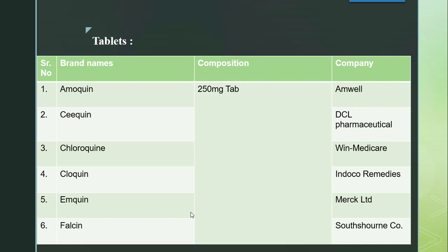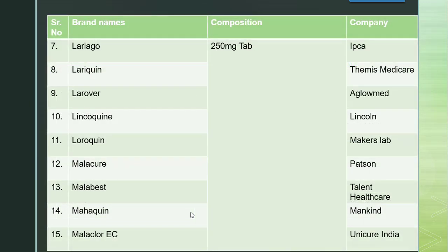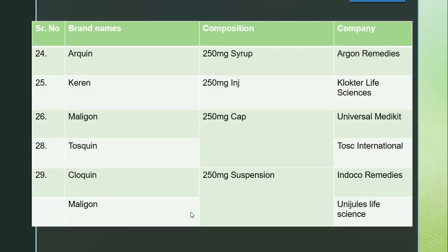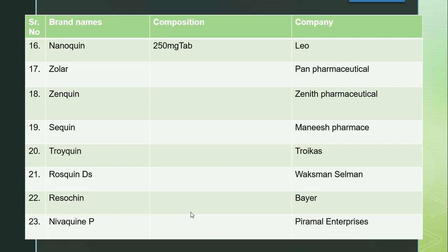Now we will look at chloroquine brand names, but first the dosage forms. All 6 brands in this first slide are tablets of 250 mg strength only. The second and third slides also show tablet dosage form, 250 mg strength. As you can see, 23 different brands are available in the market manufactured by different pharmaceutical companies — same strength, same product, with minor differences in excipients or manufacturing procedure.